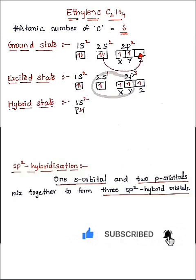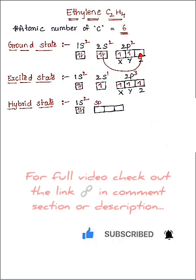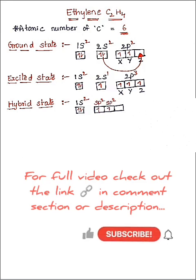This 2s orbital and x and y orbitals of 2p would combine together to form three orbitals of sp2 hybridization. So this is the first sp2 orbital, and this is the second sp2 orbital, and this is the third sp2 orbital.